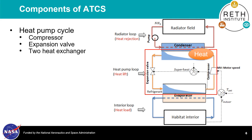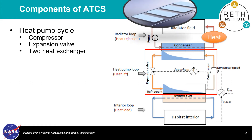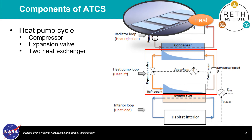Here, the heat is taken by the heat transfer fluid in another loop and delivered to the radiator field, where it gets rejected to the external environment by radiation. As the heat rejection capacity of the radiator panels can vary depending on the radiator panel conditions and environmental conditions such as solar radiation, the overall performance of the entire cycle will change accordingly.